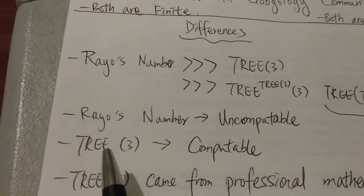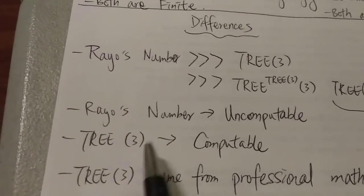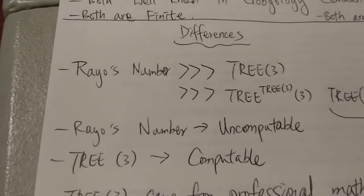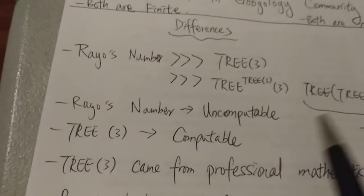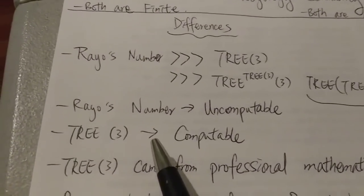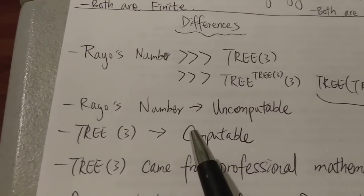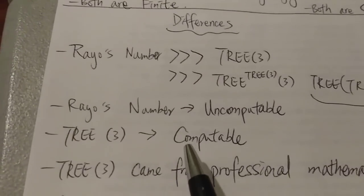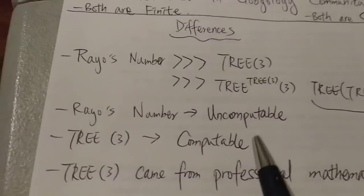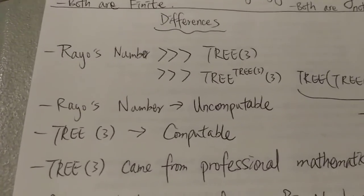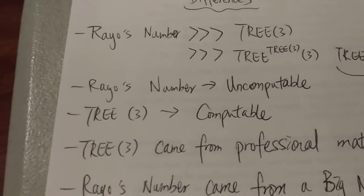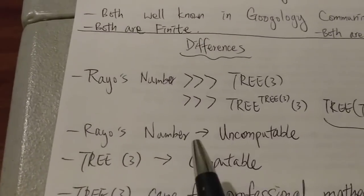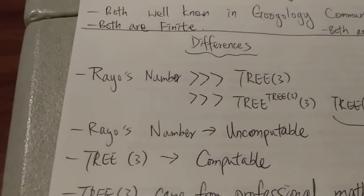But TREE(3) is actually computable. That means even though we have no idea how big it is or at least there's no way we can calculate it using modern technology or whatever—there's not enough space in the universe, something like that—but at least TREE(3) in theory is a computable number. So there is an algorithm to actually calculate TREE(3). It just takes a very, very, very long time. Even there's not enough time in the universe for you to calculate TREE(3), but at least in theory it's computable. But Rayo's number is uncomputable. That means there's no algorithm to even calculate Rayo's number.